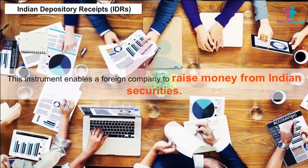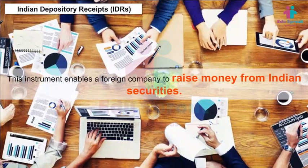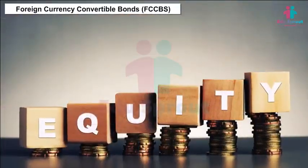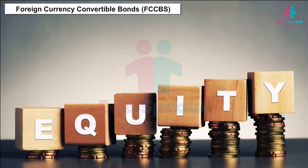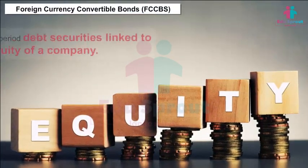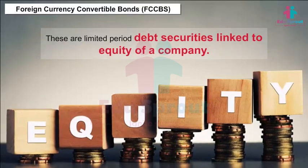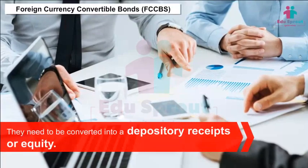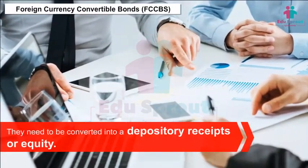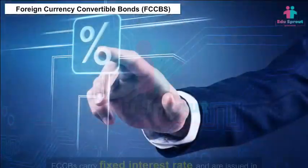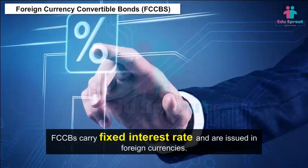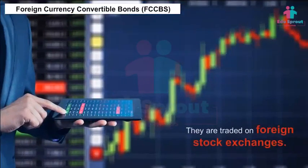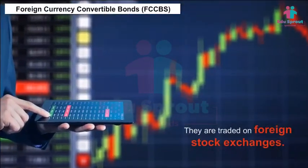American Depository Receipts (ADRs) are unlike GDRs in that they can be traded only in the USA. Indian Depository Receipts enable a foreign company to raise money from Indian securities. Foreign Currency Convertible Bonds (FCCBs) are limited-period debt securities linked to equity of a company; they need to be converted into depository receipts or equity. FCCBs carry a fixed interest rate, are issued in foreign currencies, and are traded on foreign stock exchanges.